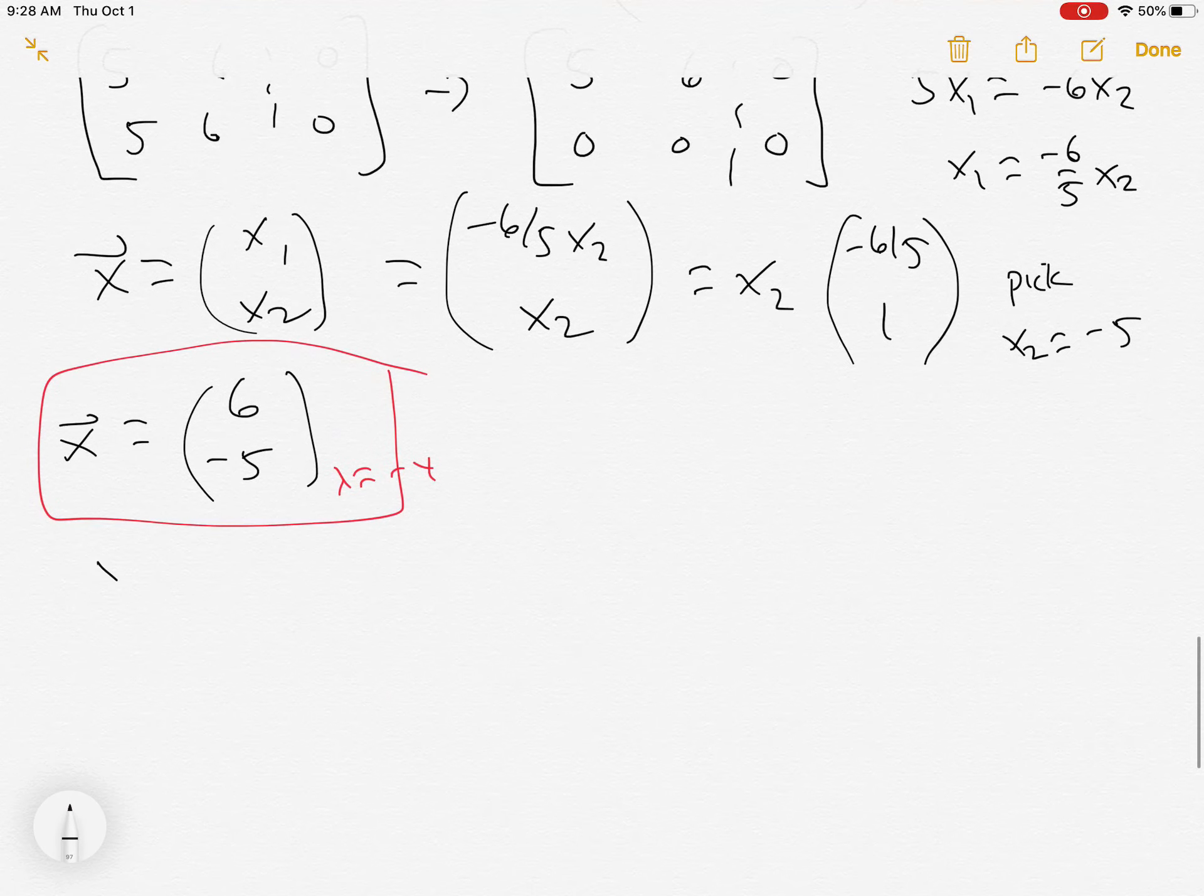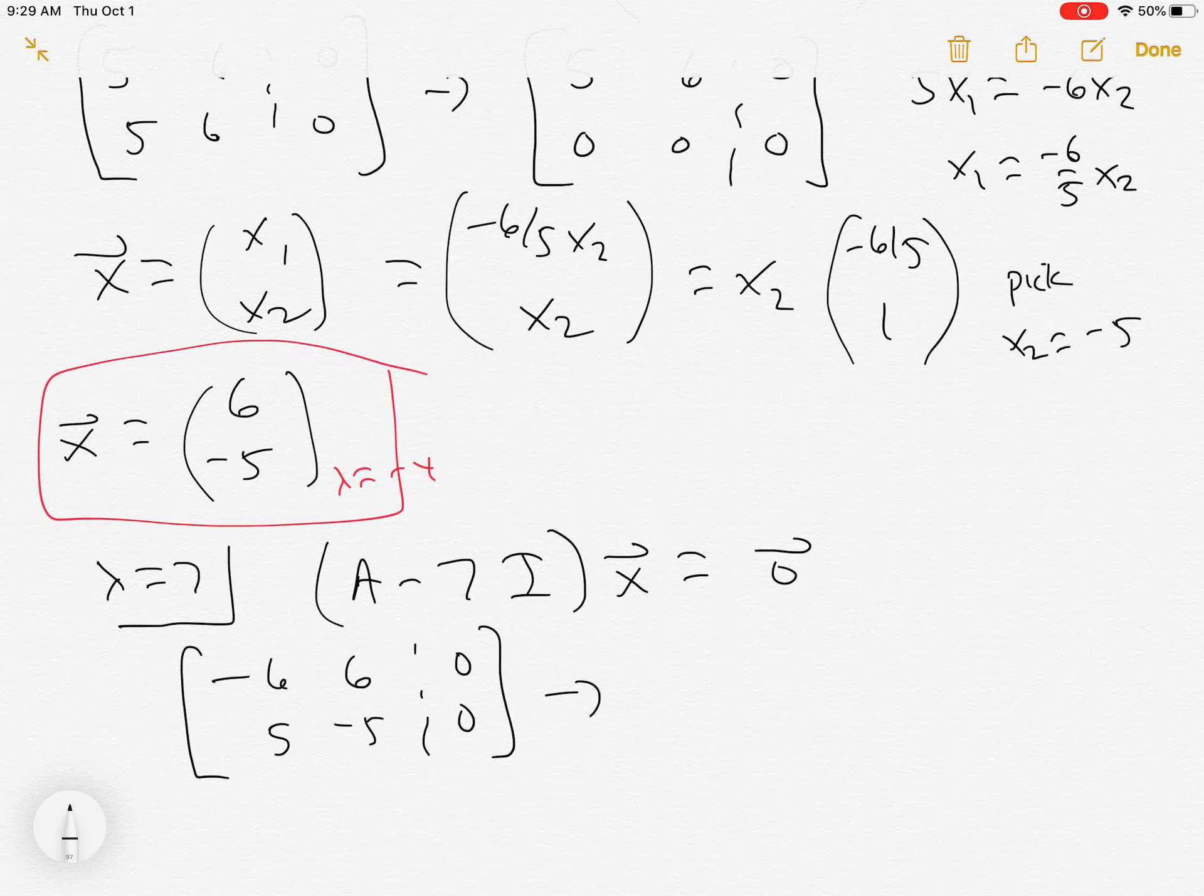Okay, so we found that guy. Now we do it again. Lambda equals 7. So we're solving (A - 7I)x = 0. And in this case, you get (-6, 6, 5, -5) times (x1, x2) = (0, 0). Which becomes (1, -1, 0, 0). And after a little bit of work, you get that x = (1, 1) is the eigenvector.